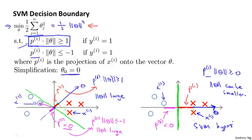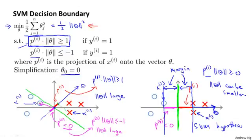This is how the SVM gives rise to large margin classification. If you look at this green decision boundary: we want the projections of positive and negative examples onto theta to be large. The only way for that to hold is if there's a large margin — a large gap separating the positive and negative examples. The magnitude of this margin is exactly the values of p^1, p^2, p^3, and so on. By making these p^i values larger, the SVM ends up with a smaller norm of theta, which is what it's trying to minimize. This is why the SVM ends up as a large margin classifier — it's maximizing the distances from the training examples to the decision boundary.